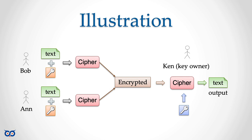Only Ken can decrypt those messages using his private key, which is related to the public key. Now imagine Bob is nosy and intercepts the message Ann sent to Ken. That message was encrypted with Ken's public key. Bob tries to decrypt it using Ken's public key, but because this is asymmetric encryption, he cannot — and that's why Ken is free to give everyone his public key.